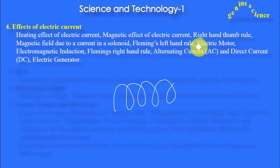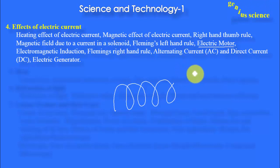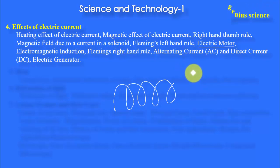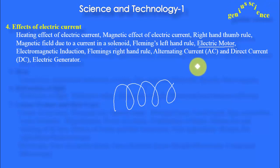Electric motor — you know how an electric motor works. When we pass the current through the coil fitted in the electric motor, that coil generates a magnetic field, and due to that magnetic field the rotor rotates, resulting in the formation of mechanical energy.